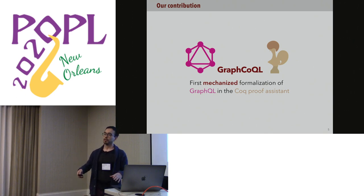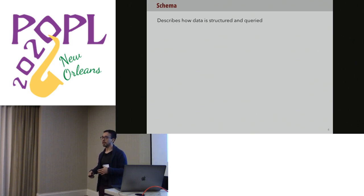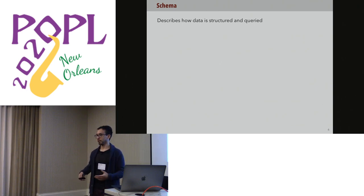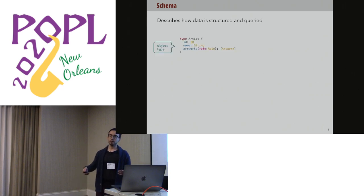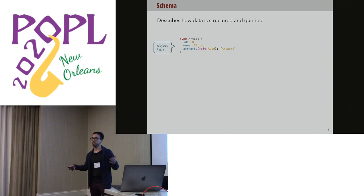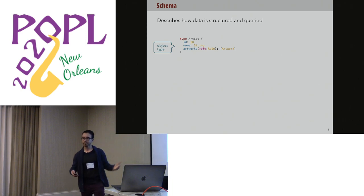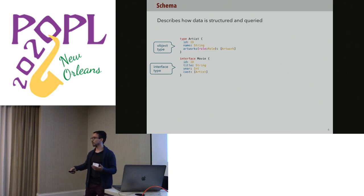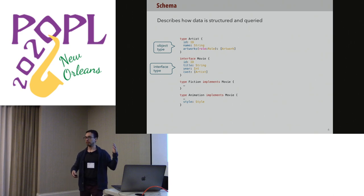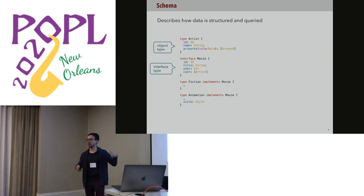The first thing you have to do in GraphQL is define what's called a schema — you have to describe how your data is logically structured. GraphQL provides a language to specify how your data is structured. For instance, our data has a type 'artist' (like Tom Hanks) with some properties — this is called an object type. We can also define interface types, like 'movies', and then have object types implementing these interfaces, like fictional movies and animation movies.